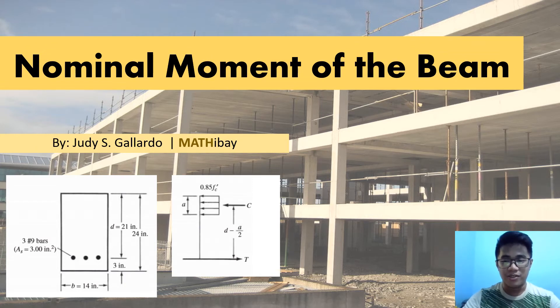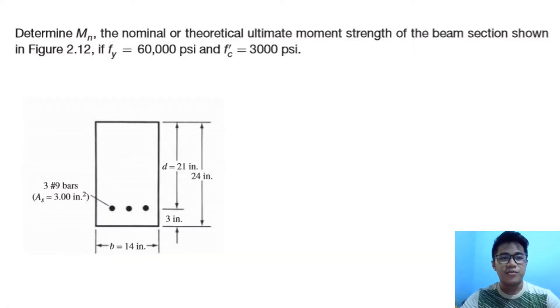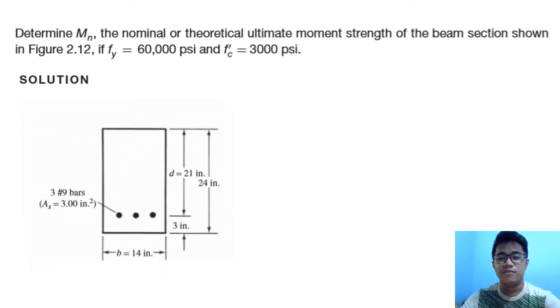Let's proceed. Our example: determine the nominal or theoretical ultimate moment strength of the beam for the section shown in the figure, if fy = 60,000 psi and f'c = 3,000 psi. That is our section there. In our solution, we have to draw this diagram.